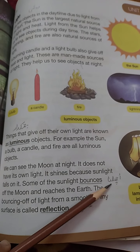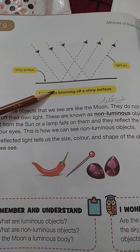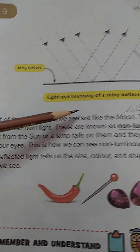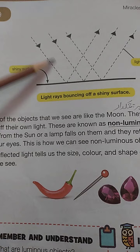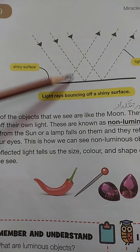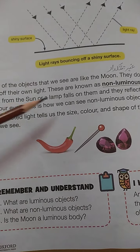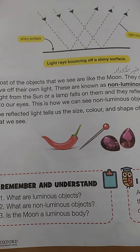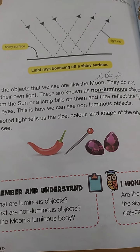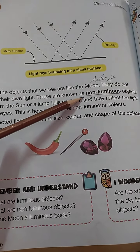Highlight the word 'bounces' — that is uchalna (to bounce) — and 'reflection' — that is aks (image/reflection). Come to page number 90. यहाँ पर reflection के बारे में diagram draw करके बताया गया है कि how light rays bounce off a shiny surface. Most of the objects that we see are like the moon — they do not have their own light। जिस चीज़ की अपनी रोशनी नहीं होती उसको हम non-luminous बोलते हैं।